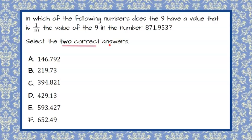So we need to understand first and foremost that we're picking two correct answers out of the six multiple choice answers. We're multiple select. In which of the following numbers does the 9 have a value that is one-tenth the value of the 9 in the number 871 and 953 thousandths? So notice I have circled all the numerical values, but now we need to interpret and understand what we're being asked.